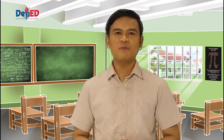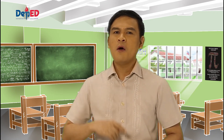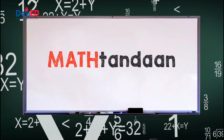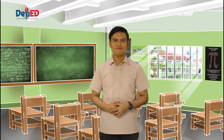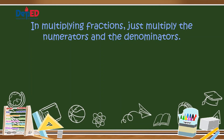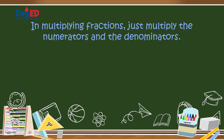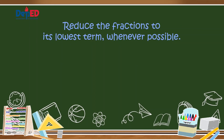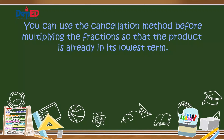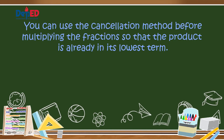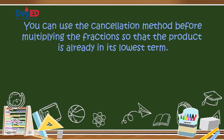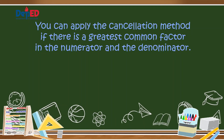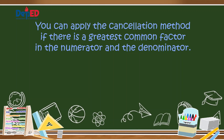Did you get the correct answer? I hope you understand the steps in multiplying fractions and will always ma-tandaan! In multiplying fractions, just multiply the numerators and the denominators. Reduce the fractions to their lowest term whenever possible. You can use the cancellation method before multiplying so that the product is already in its lowest term — apply it if there is a greatest common factor in the numerator and the denominator.